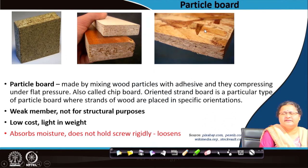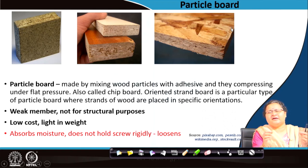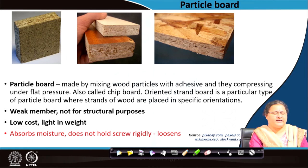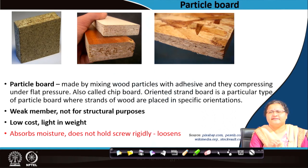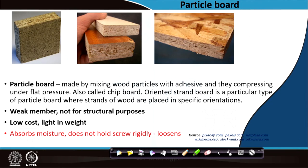Oriented strand board is a particular type of particle board where the long pieces or wood straws are placed in a particular orientation when being made and then pressed. You can see the orientation of the strands in the image. Key properties of these particle boards are: low cost, lightweight, and good insulation.